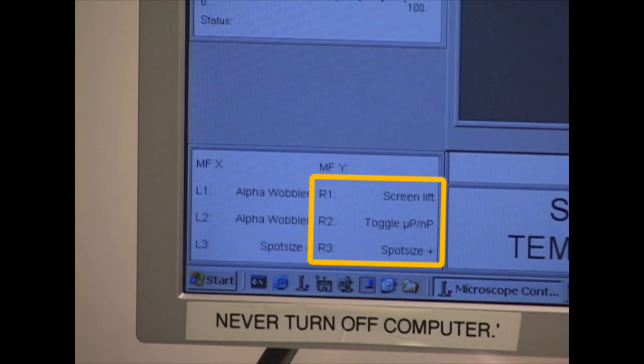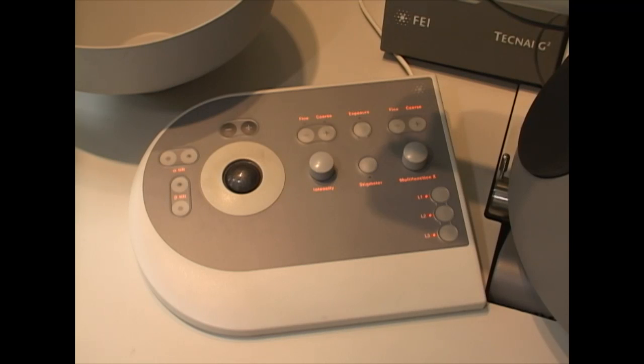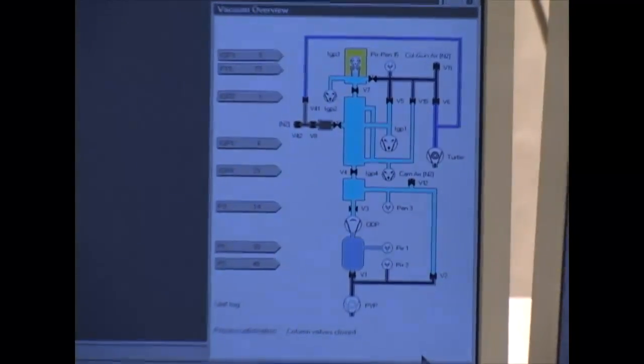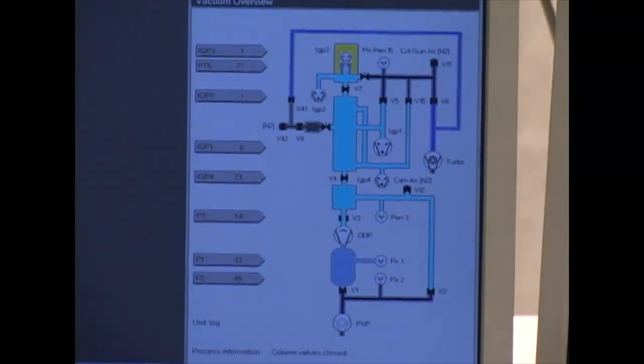The lower left box with L1, L2, L3 reflect the left control panel, and the R1, R2, and R3 shows the state of the right control panel. The multifunction controls are used for several functions in different modes. In the right bottom box, select Vacuum Overview to show the status of the vacuum system and valves.